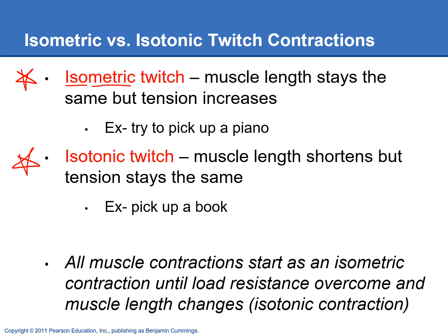An isotonic twitch — 'iso' means the same and 'tonic' refers to tension or force. This is where you are able to generate enough force or tension to lift something, and your muscle will shorten, but the muscle tension stays the same. For example, picking up a book and lifting it off the table — the muscle length will shorten, but the amount of tension or force you're generating while you're moving that book will stay the same throughout that motion.